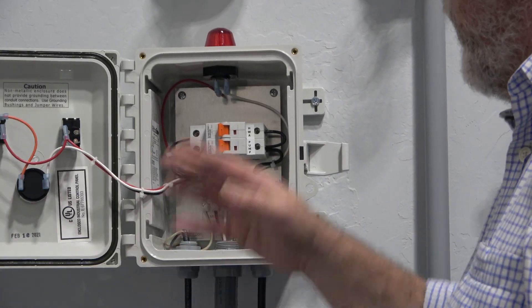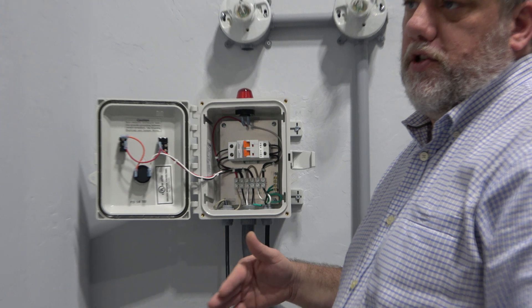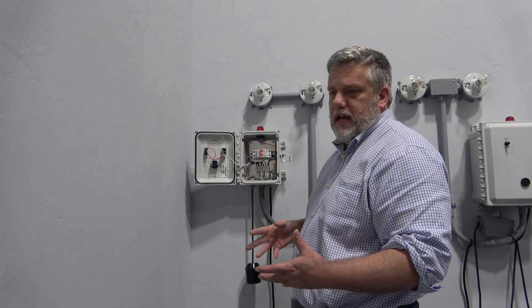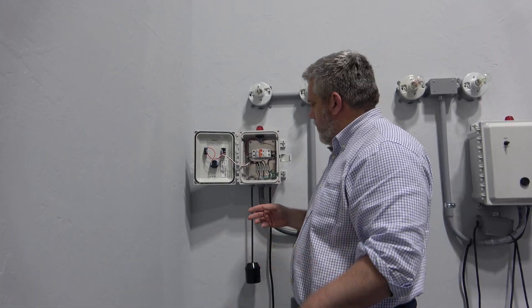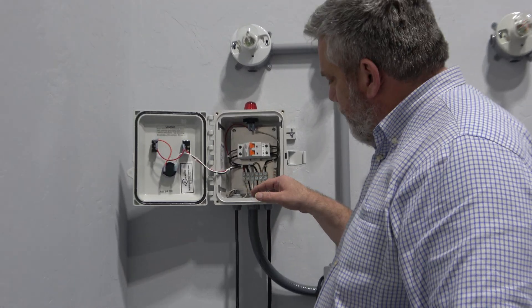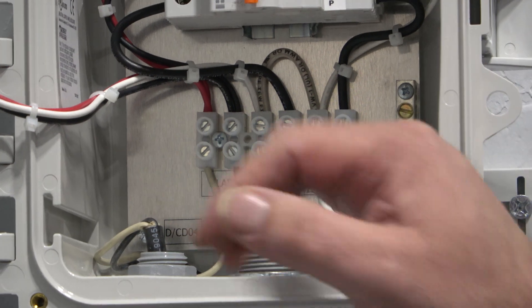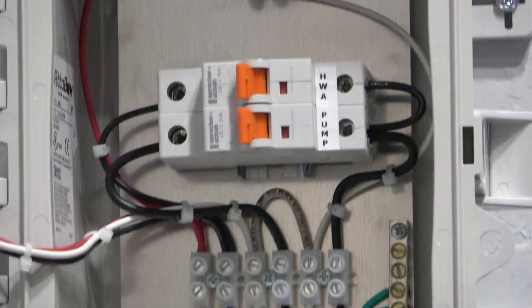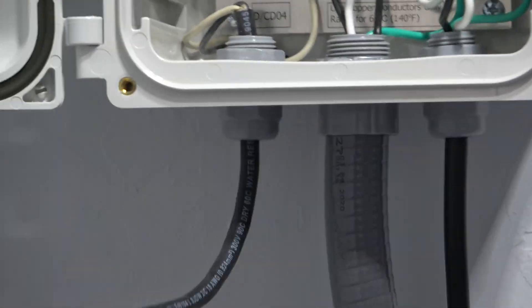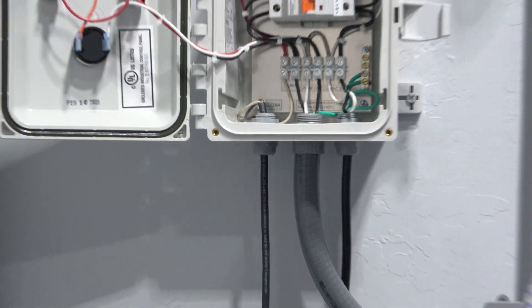This is a 120-volt panel used for small lift stations and things of that nature. It's pretty straightforward wiring. You have your voltage that comes in, then your pump that goes out, and your alarm float here. That's what that does, and then you have your pump.